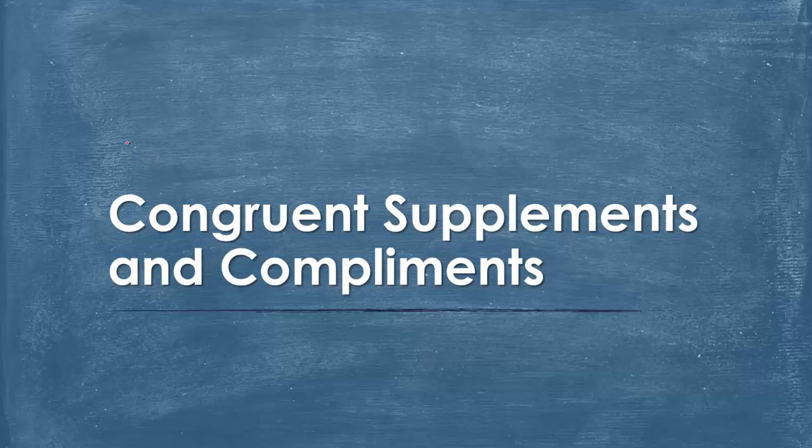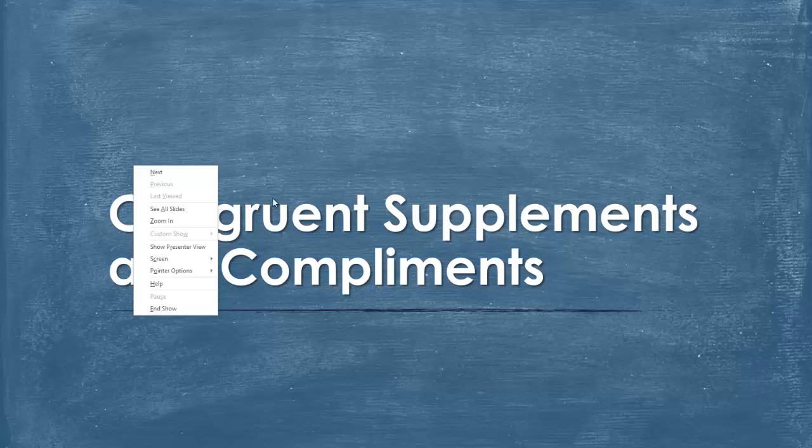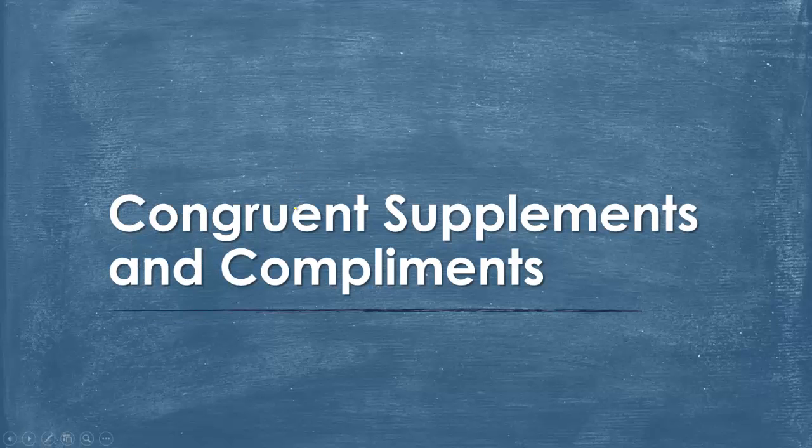All right, so now in your books, this is going to be 2.4. Let me change the color there. So it's going to be 2.4 in your books, and we are talking about congruent supplements and complements.